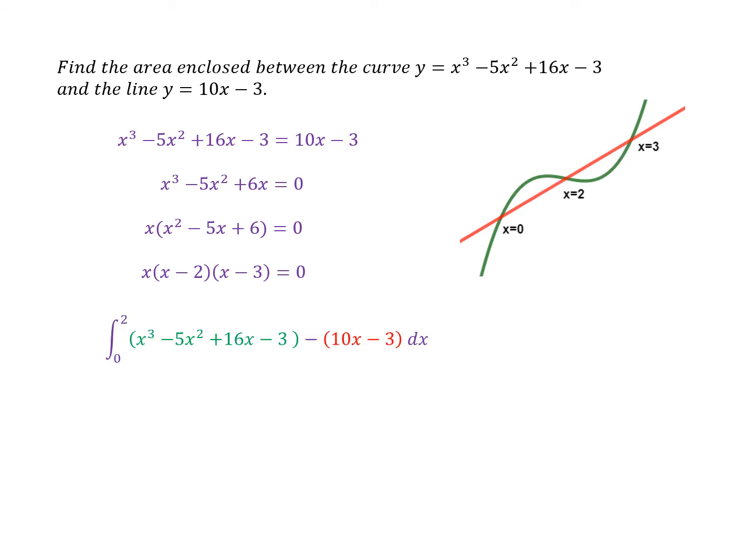I'm integrating from x equals zero to x equals two, the green line minus the red line with respect to x. I could do this longhand or I could cheat with my calculator, and get the answer eight thirds.